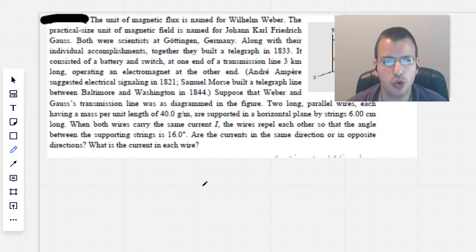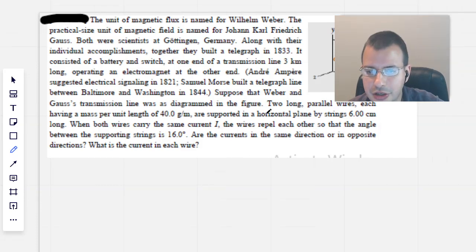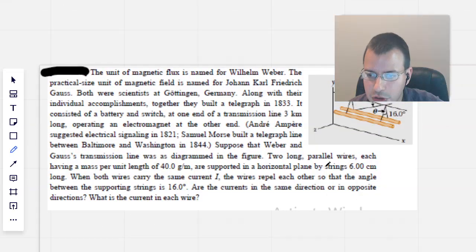Magnetic flux is named the Weber, and then we have the Gauss, and we have a little bit more history. And then we have two long parallel wires, each having a mass per unit length of 40 grams per meter and supported in a horizontal plane by strings that are six centimeters long.